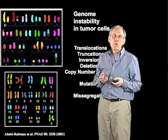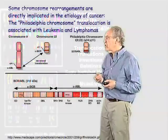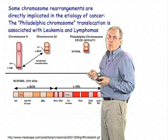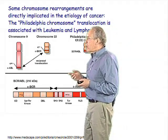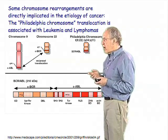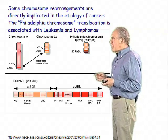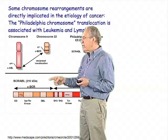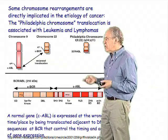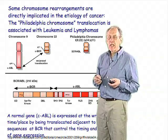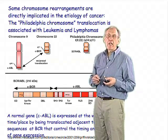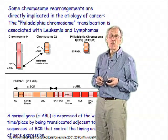Many of these alterations and translocations probably just come along for the ride and are not particularly important. Here's an example of one very important rearrangement called the Philadelphia chromosome — found because it was identified in Philadelphia — a translocation that joins a small part of chromosome 22 to the end of chromosome 9. This translocation joins a normal C-ABL gene, which is a protein kinase, to the region that is controlled by the BCR gene.